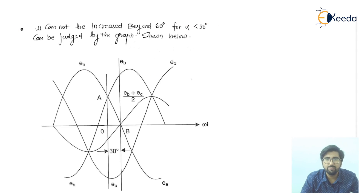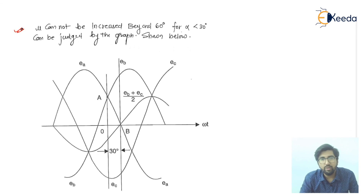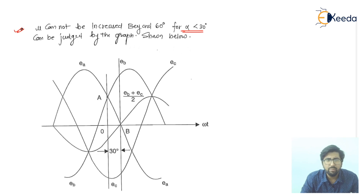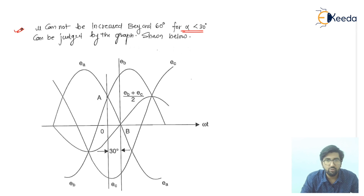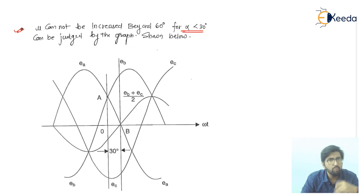Mu cannot be increased beyond 60 degrees for alpha equal to 30 degrees. The benefit of taking mu greater than 60 degrees — mode number three — is that this mode is only applied when alpha is less than 30 degrees. So they are correlated terms: for the operation of mu more than 60 degrees, alpha should be greater than 30 degrees — only then can it operate.